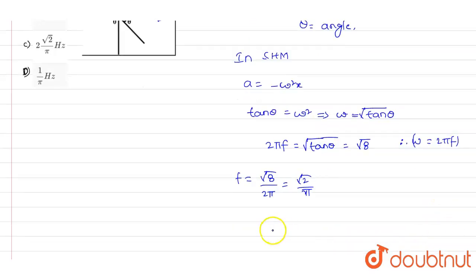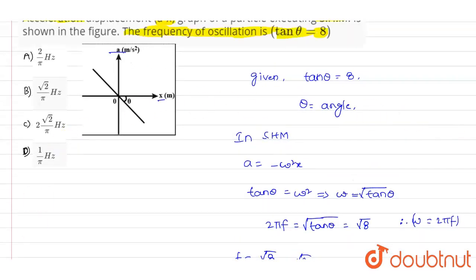Out of these four options, if you see option B, we have square root of 2 divided by π hertz, which is the value of the frequency. So option B is the correct answer for this question.